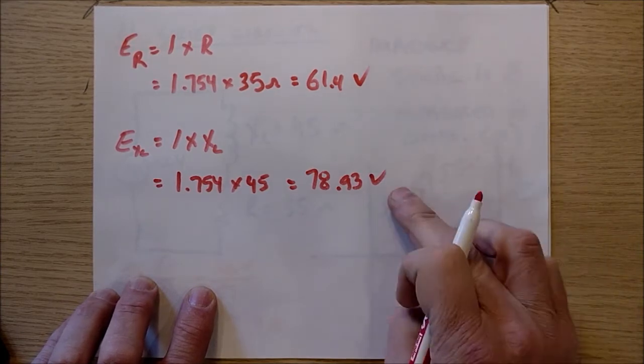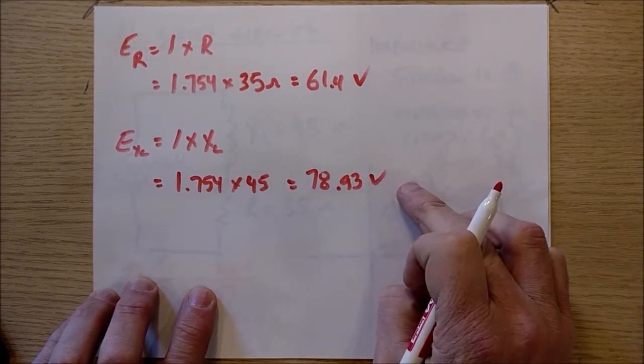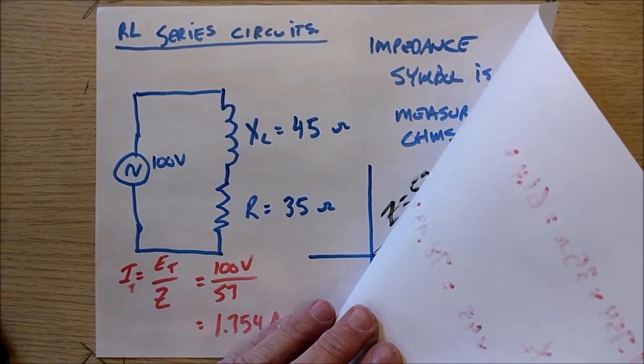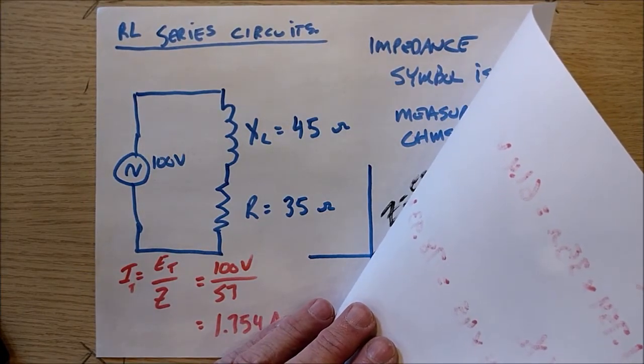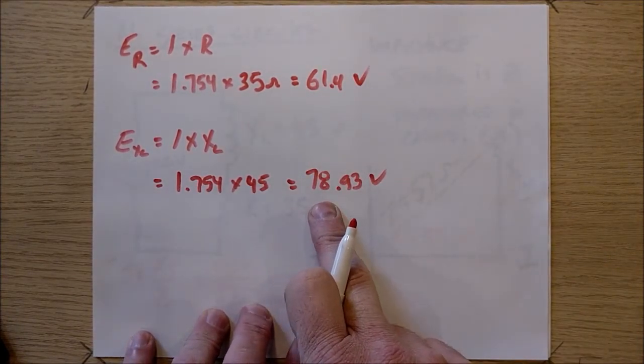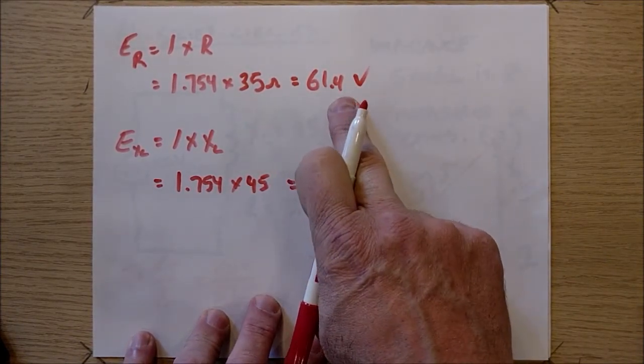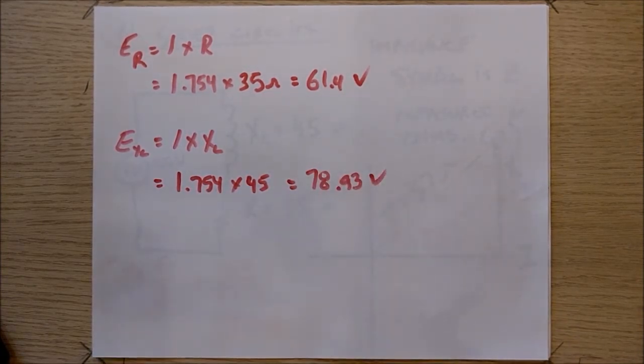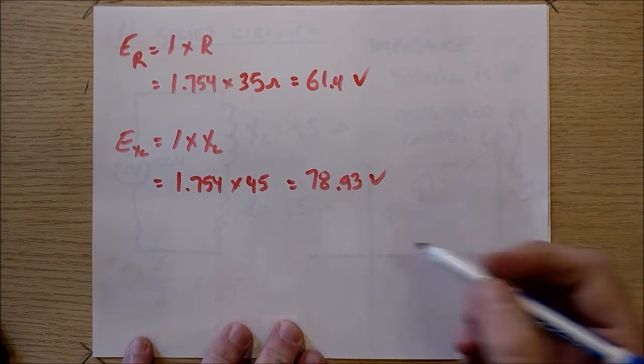Those are our two voltage drops in the circuit. Now, if you look back here, you can see that the total circuit voltage is 100 volts. And supposedly I've got almost 88 volts dropping on one component and 61 volts dropping on the other component. And that doesn't seem to add up to 100, but it does as long as you add them up as phasors. And so we're going to do that right now.